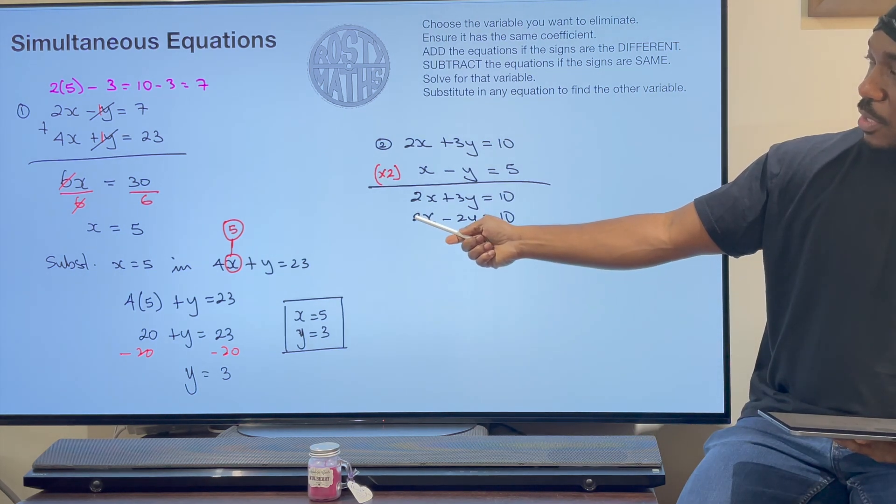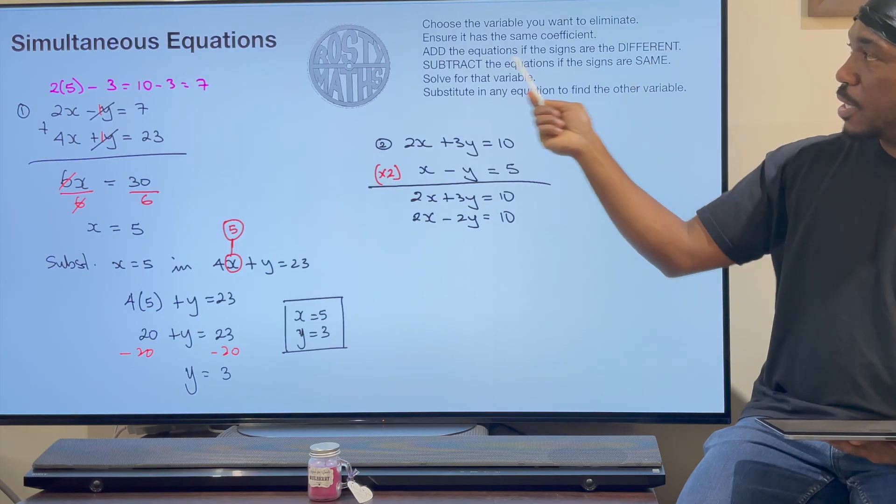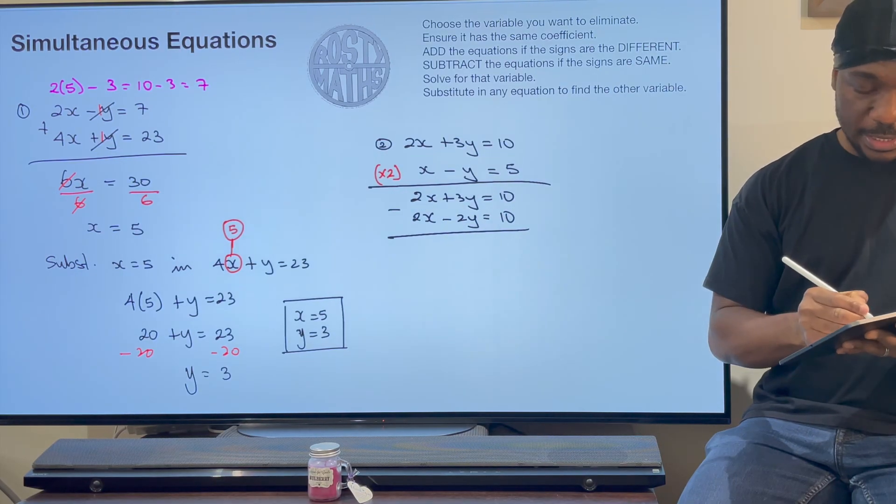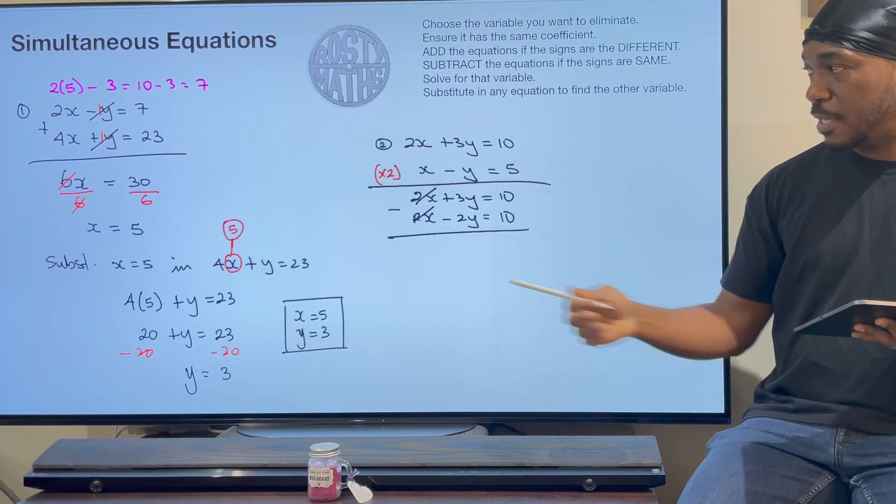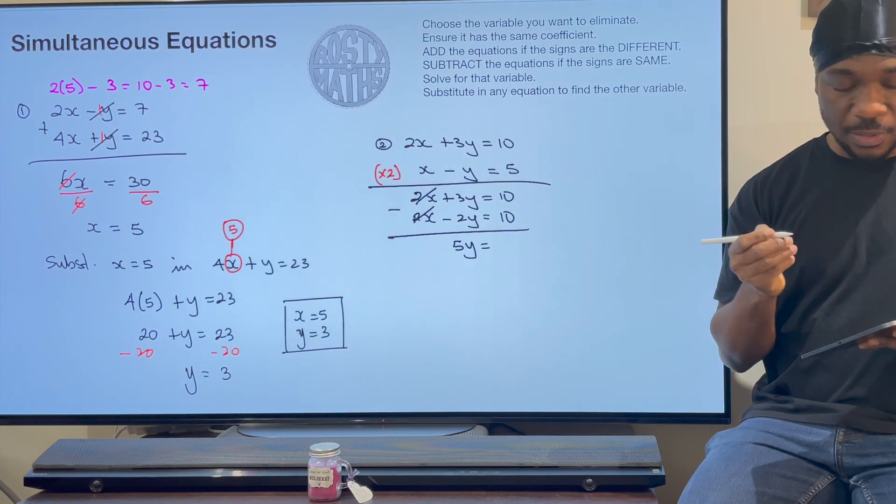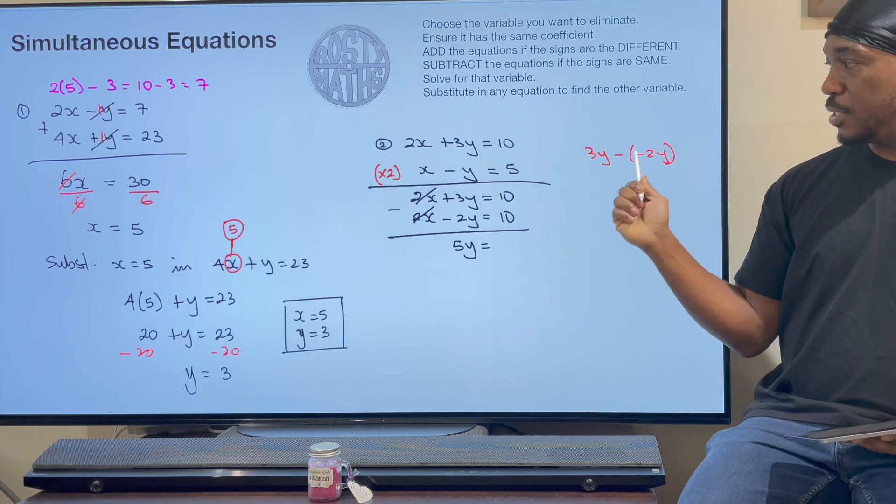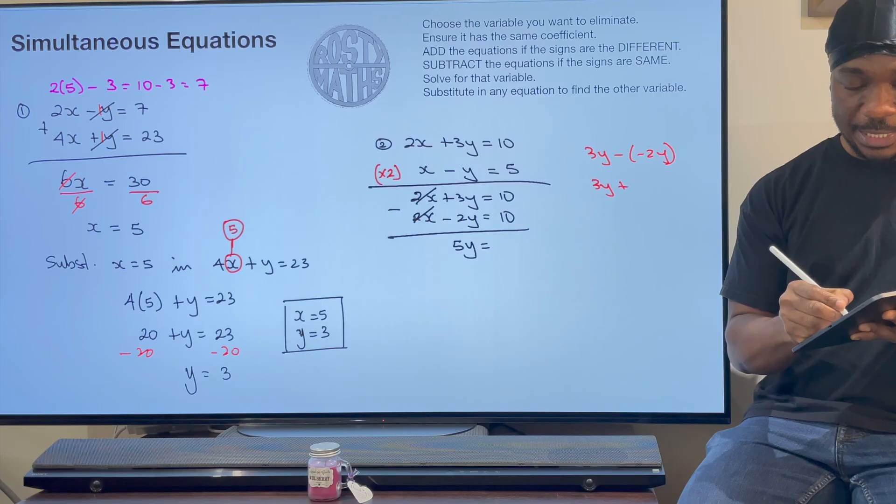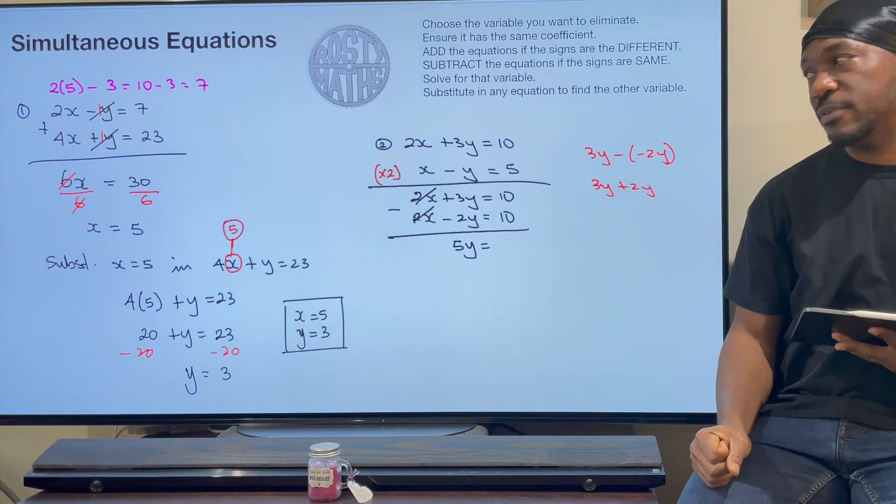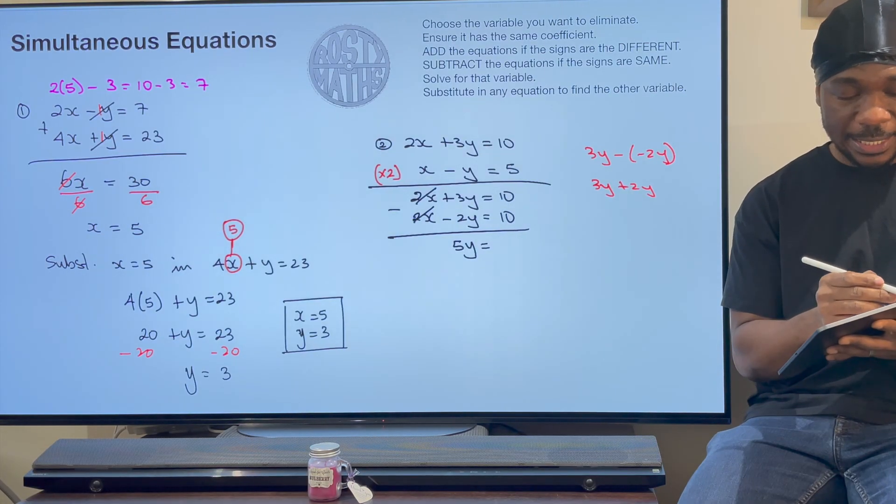Now I have got the same 2 and 2 there. The signs are the same. If it's the same, I should subtract. Let's subtract them. 2x take away 2x. Goodbye. That's what I wanted. I wanted to eliminate it. Then 3y take away 2y becomes 5y. Why? It's 3y take away a negative 2y. And these two together will become positive. So 3y add 2y. That's why that is 5y. If that caught you off guard, click on the pop-up banner and have a look at my video on adding and subtracting negative numbers.